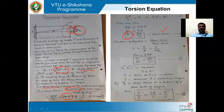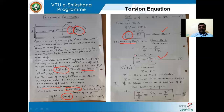The modulus of rigidity G is defined as the ratio of shear stress to shear strain: G equals tau divided by phi. Substituting phi equals R theta by L, we get tau L equals G R theta, or tau by R equals G theta by L. This is equation 3, giving the ratio of shear stress to the radius equal to the product of modulus of rigidity and angle of twist divided by L.